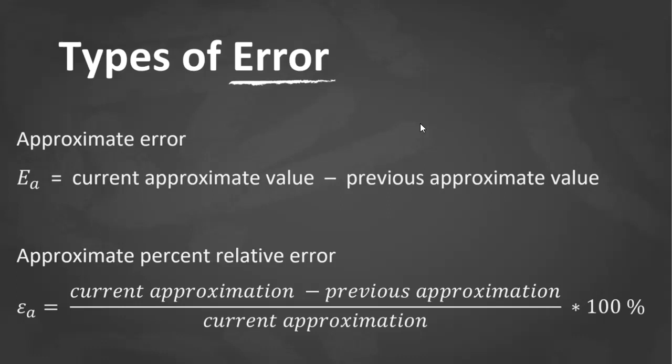Another thing to note is that error can be negative. An instance is when the previous approximation is greater than the current approximation. Oftentimes we are not concerned with the sign of the error, but on the magnitude.